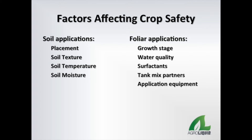Here are some of those agronomic considerations. In addition to the product itself, there are several cultural practices and environmental conditions that need to be taken into account when determining crop safety risks. Soil environmental conditions play a large role in crop response to fertilizer products, with cooler, drier soil conditions having a higher potential for adverse crop response compared to a warmer, moist soil. Foliar applications have additional issues to be aware of — crop growth stage is a very important factor in the safety and performance of foliar applications. Tank mix partners and surfactants may also play a role. When tank mixing with crop protection products, it is important to read and follow label directions of the pesticides, paying special attention to tank mix restrictions and compatibility testing instructions.